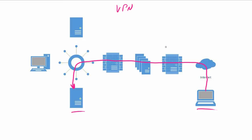The only port they'll leave open is 443 for their web server, because they have HTTPS working for their e-commerce server and secure online transactions. That's the only port they consider more secure. So I won't use L2TP, but is there still a secure solution? Yes — you can use Secure Socket Tunneling Protocol, or SSTP, as your virtual private network.